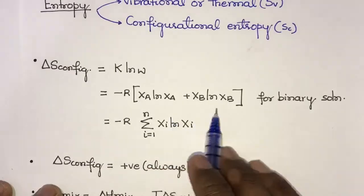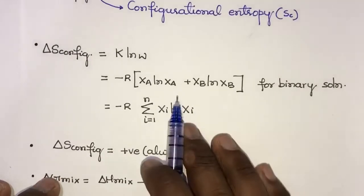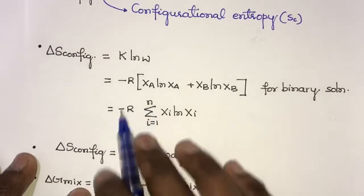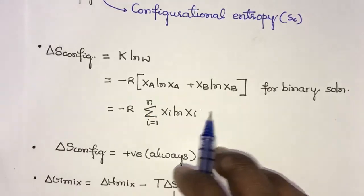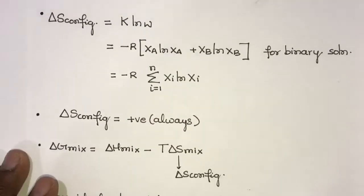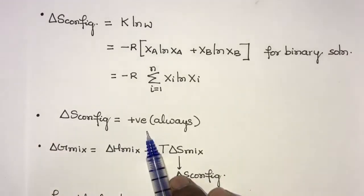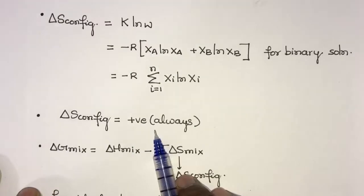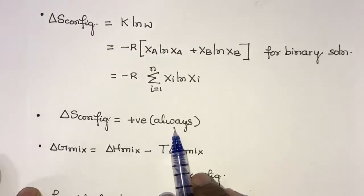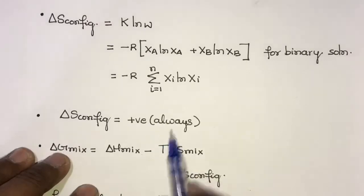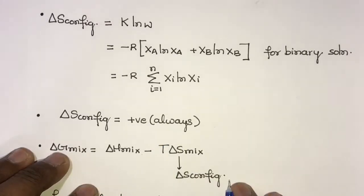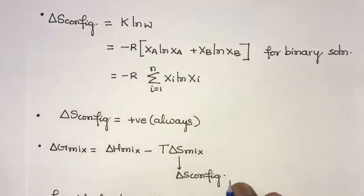For ternary, quaternary, and higher-order systems, the general equation for ΔS_configuration is: ΔS = −R Σ(i=1 to N) xᵢ·ln xᵢ. Delta S configuration is always positive, since randomness is never negative — there is no negative randomness. Therefore, entropy in the case of ΔS configuration is always positive.